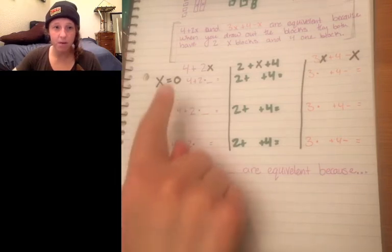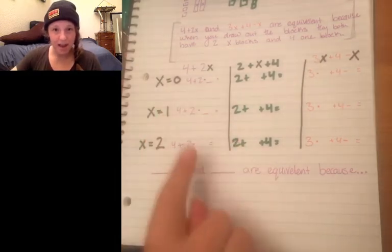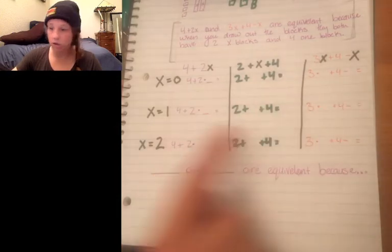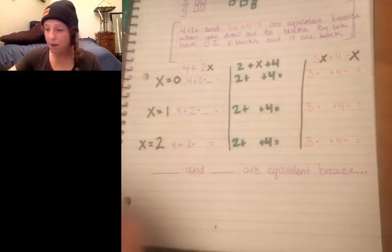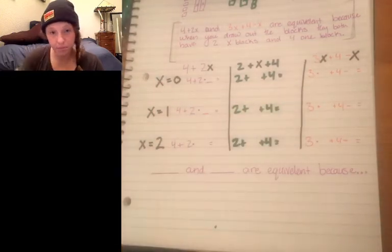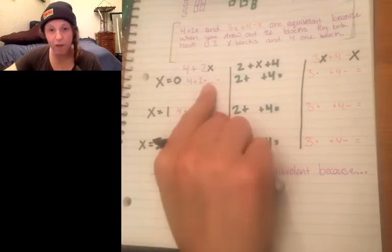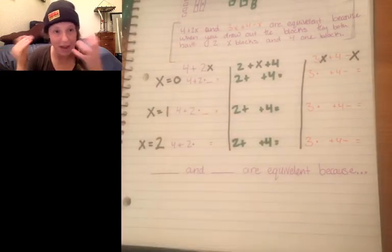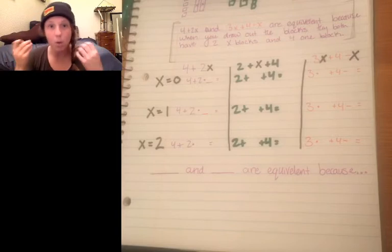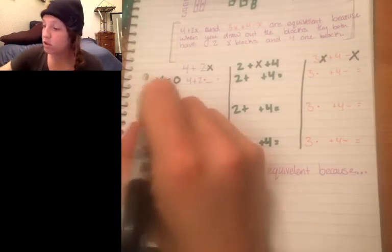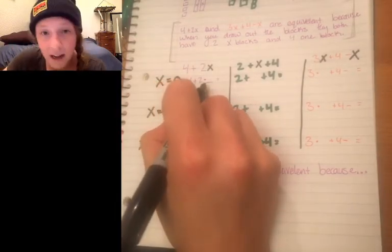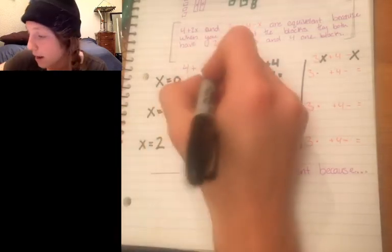So here again I have my three expressions I have four plus two X and I have two plus X plus four and then I have three X plus four minus one. And here I've drawn them out three different each of them three different times because I'm gonna plug in a different variable number for each each time and I'm gonna do them for each one so all of these three I'm gonna plug in zero.